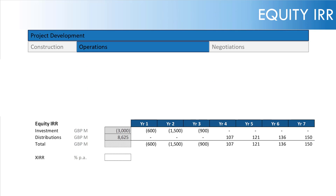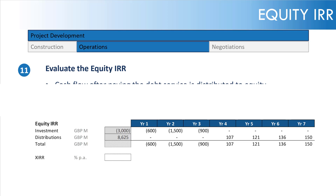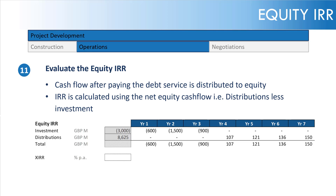Moving on to returns metrics — let's evaluate the equity IRR. The investment amount is as previously calculated: it's what equity is putting in. The distribution comes from the cash flow after paying the debt service. So after paying down the debt service, we are distributing all the cash flow available to equity. The IRR is calculated using this net equity cash flow — the distributions less the investment — using the XIRR function in Excel. Bear in mind this is 25 years of cash flows with no terminal value at the end.